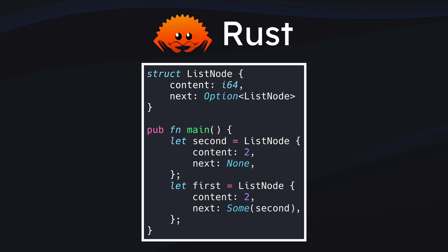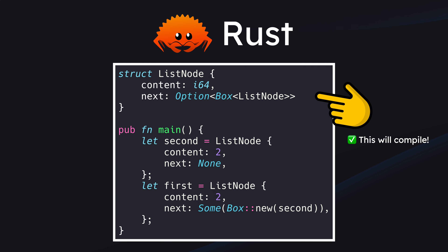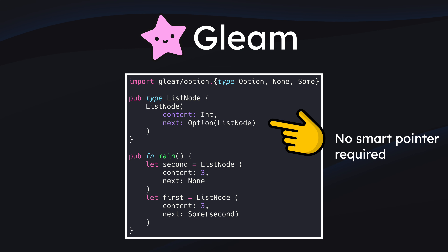One hallmark design decision in Rust is a lack of autoboxing. If we have a value for which the size is not known at compile time, the Rust compiler will force us to use a smart pointer like Box, RC, and so on. These values need to be stored on the heap instead of the stack, so Rust forces us to be ultra-explicit about it so we know we're making a performance concession. This is really nice for performance-critical applications, but the reality is that many applications won't be tangibly affected by this performance hit, and in those cases it can make sense to abstract those details away from the developer — making the code a lot cleaner without any downside.